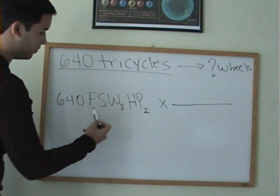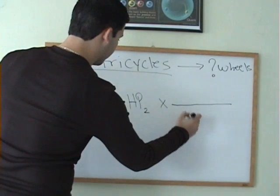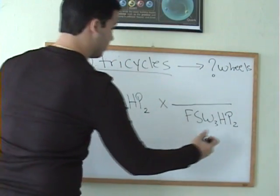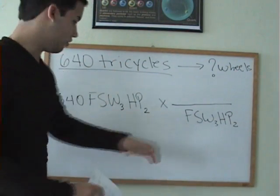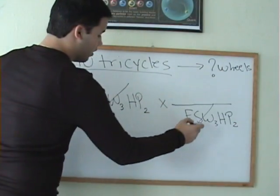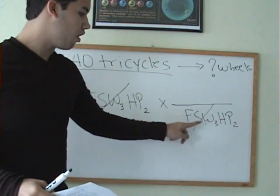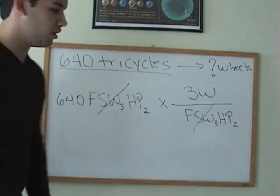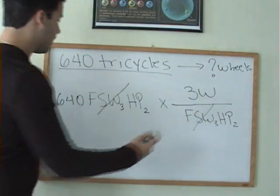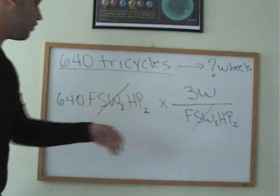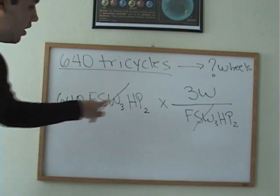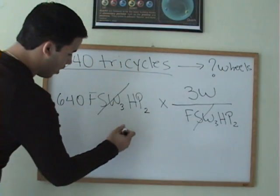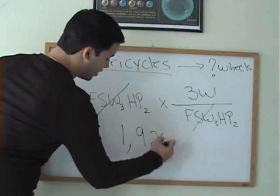Now, this needs to cancel out. So, you're going to write this here in the bottom, F, S, W3, H, P2. Now, this is one tricycle. The tricycle is going to cancel out, and we want wheels. How many wheels are in one tricycle? We know that there are three wheels, or three W. So, now we have wheels by itself. The next step is to multiply. You're going to get 640 multiply times 3, and then divide by 1, and you get 1,920 wheels.